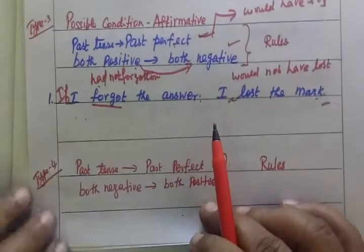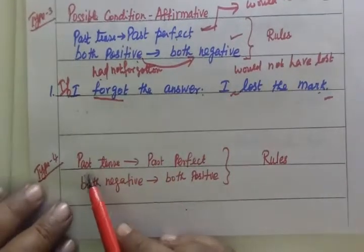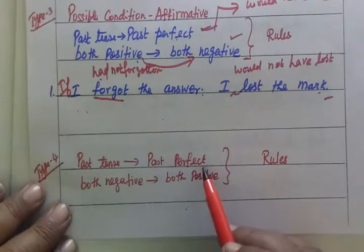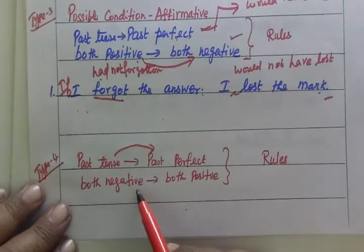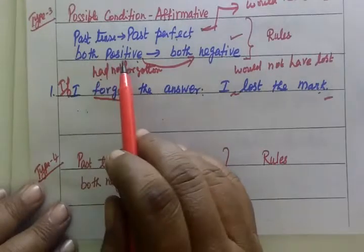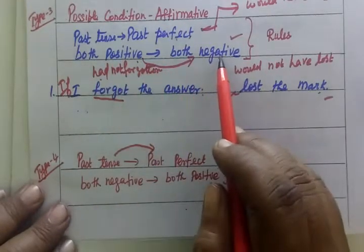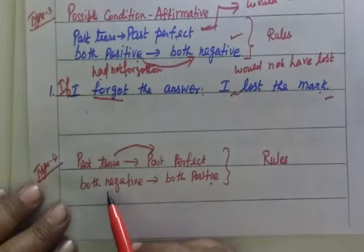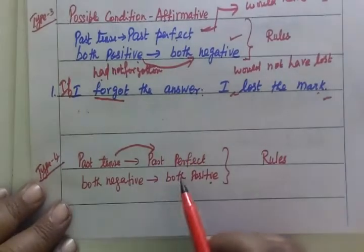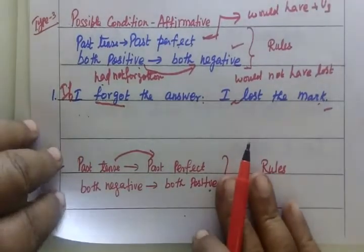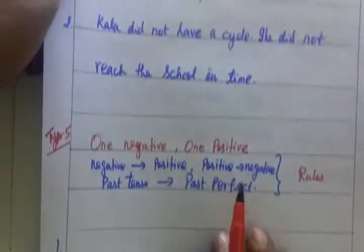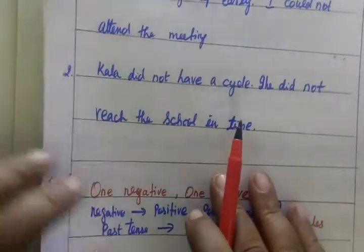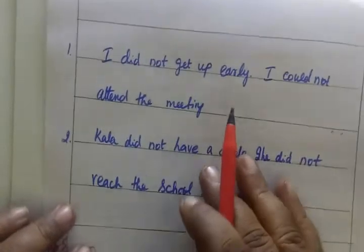Now come to the next type. Past tense and past perfect. This is two positives and two negatives. In the next rule, the two negatives are changed into positive form. See the first sentence: I did not get up early, so I could not attend the meeting.